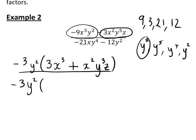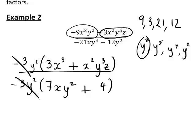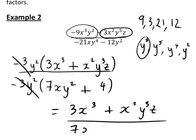On the denominator: −21 is 7 × −3, leaving 7; x remains; y⁴ divided by y² leaves y², giving 7xy². The last term −12y² is 4 × −3y², leaving plus 4 inside the brackets. Cancelling the −3y² from numerator and denominator, our original expression simplifies to (3x³ + x²y³z) divided by (7xy² + 4).